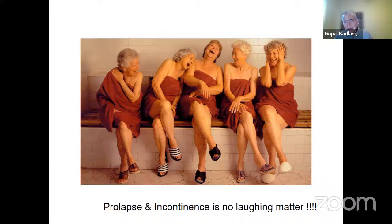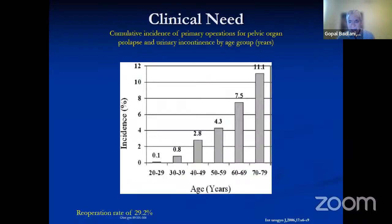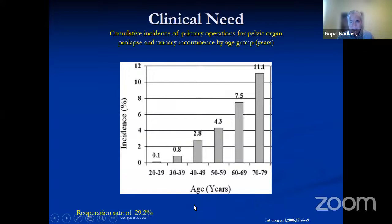Prolapse, as well as incontinence, is a quality of life issue and it affects a significant number of women. It is estimated that by age 70 to 79 you'll have 11 operations per hundred, but also notice the recurrence rate of about 30% that occurs if you do a tissue-based operation. We as urologists focus more on incontinence and less on prolapse. We often ignore the prolapse, learn a little about the anterior approach but forget the posterior aspect and apical prolapse. The success rate drops if you focus on just one aspect.